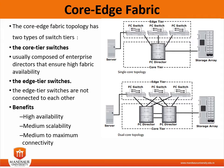Based on the number of core tier switches, this topology has different variations, such as single core topology or dual core topology. To transform a single core topology to a dual core topology, new ISLs are created to connect each edge switch to the new core switch in the fabric.